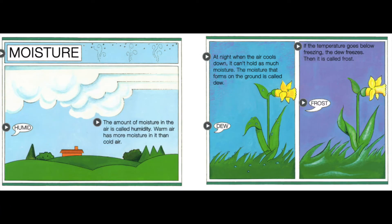The amount of moisture in the air is called humidity. Warm air has more moisture in it than cold air. At night, when the air cools down, it can't hold as much moisture. The moisture that forms on the ground is called dew. If the temperature goes below freezing, the dew freezes. Then it is called frost.